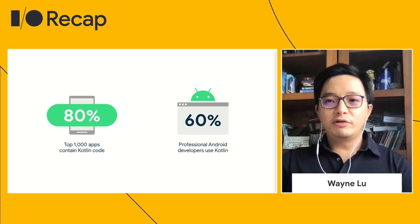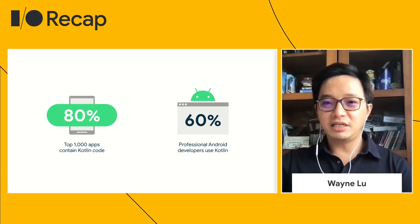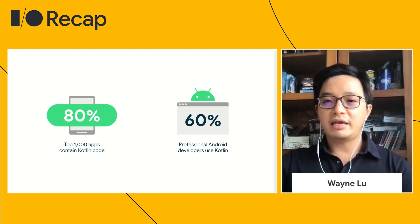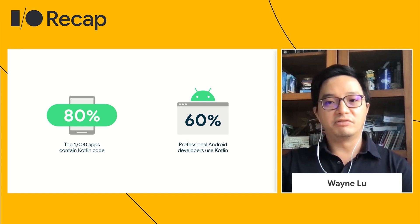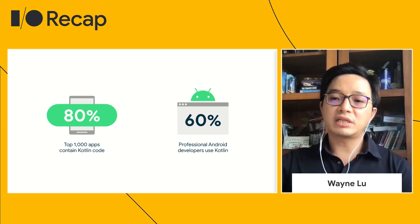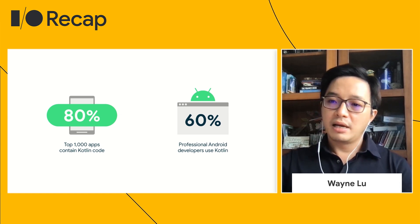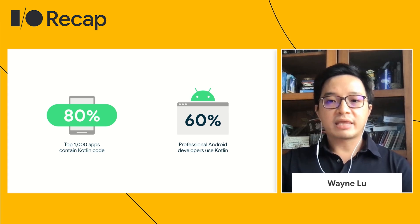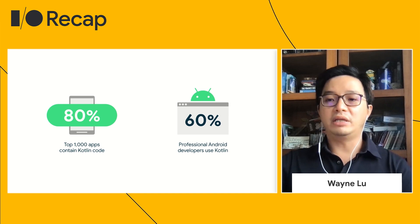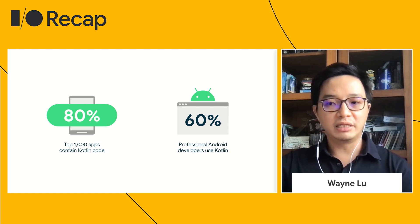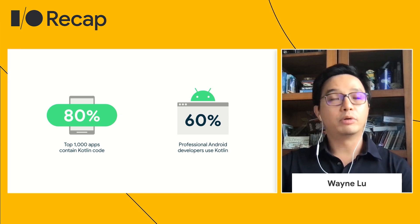We also have four universities — Chandigarh University, Shivaji University, IK Gujral Technical University, and Ganpat University — and two skilling partners, Learn4Grow and Telangana Academy for Skills and Knowledge. These are all in India, and we are offering Android with Kotlin courses to their students, with many more partners to be added soon.